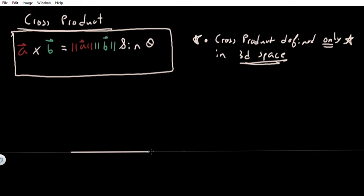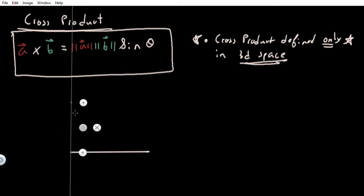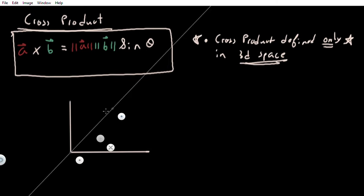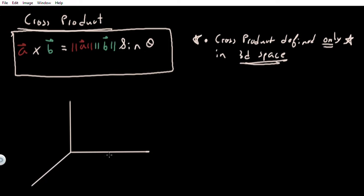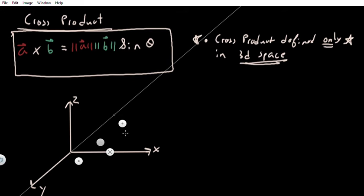Alright, with that out of the way, let's get on to drawing our coordinate axes. Let me delete this and grab my ruler. Here's our x-axis, here's our z-axis — I apologize — and here is our y-axis.